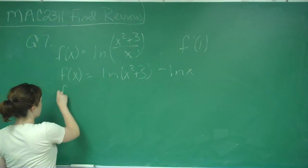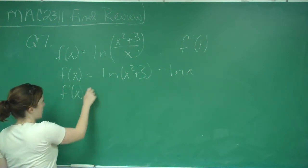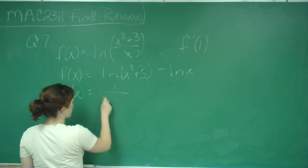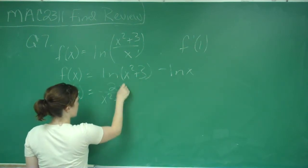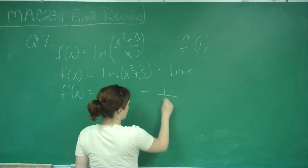So now I can take the derivative, and f'(x) is equal to 1 over (x² plus 3) times the derivative of the inside, which is 2x, minus 1 over x.